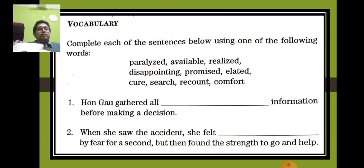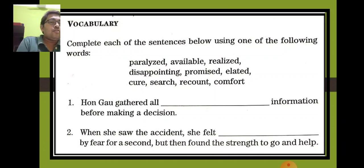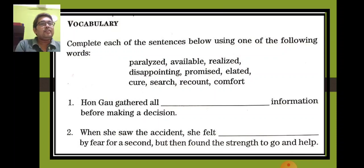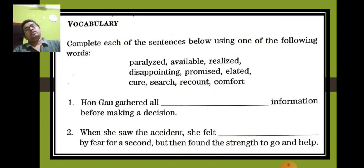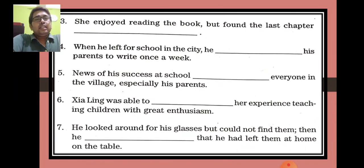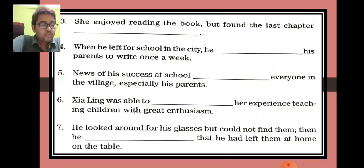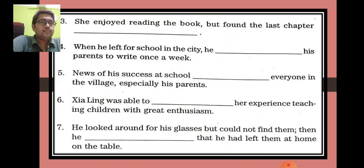Second sentence: When she saw the accident, she felt dash by fear for a second but then found the strength to go and help. The answer will be 'paralyzed.' Third sentence: She enjoyed reading the book but found the last chapter — answer: 'disappointing.' Fourth sentence: When he left for school in the city, he dash his parents to write once a week. Answer: 'promised' — he promised his parents to write once a week.